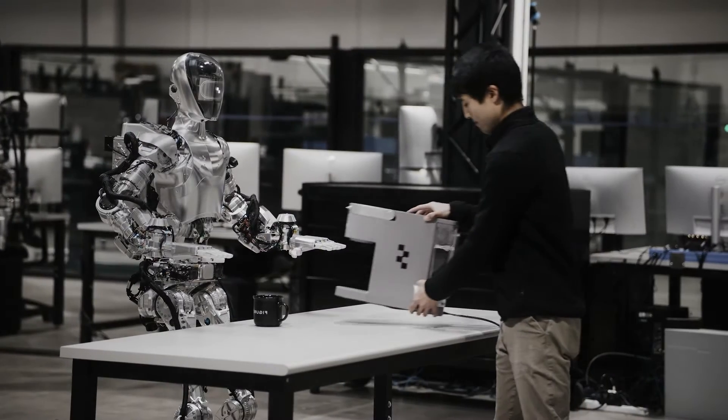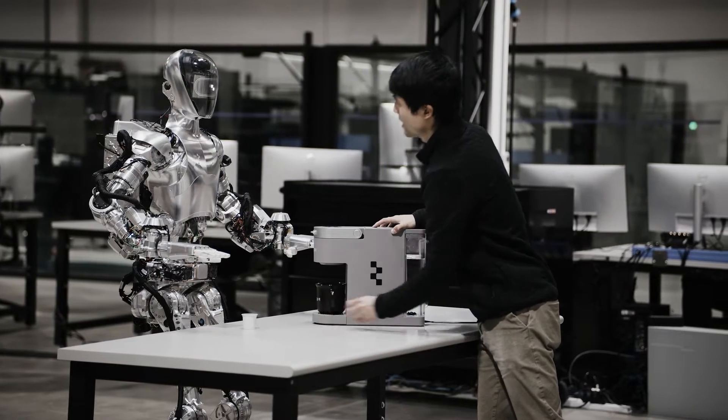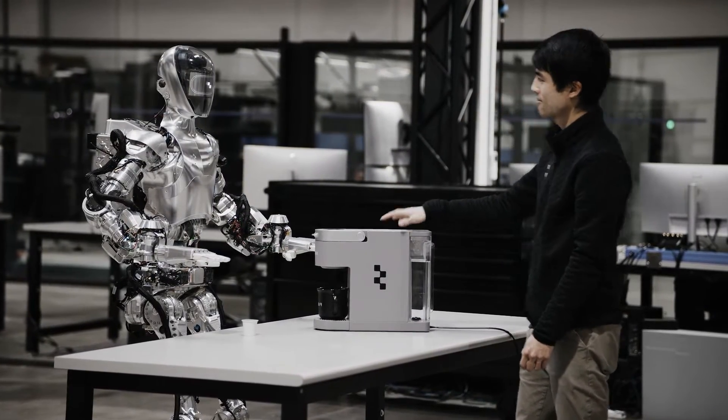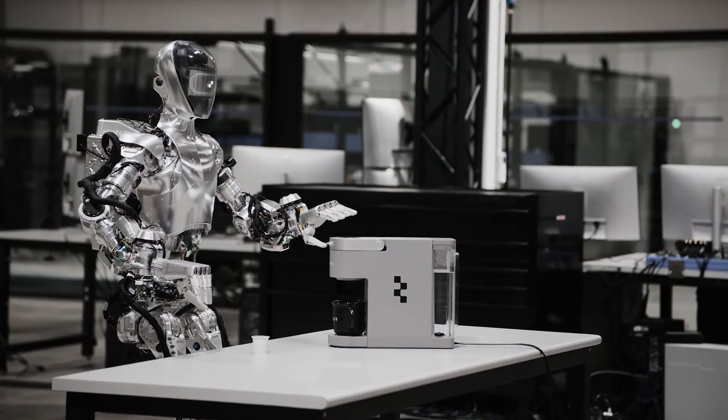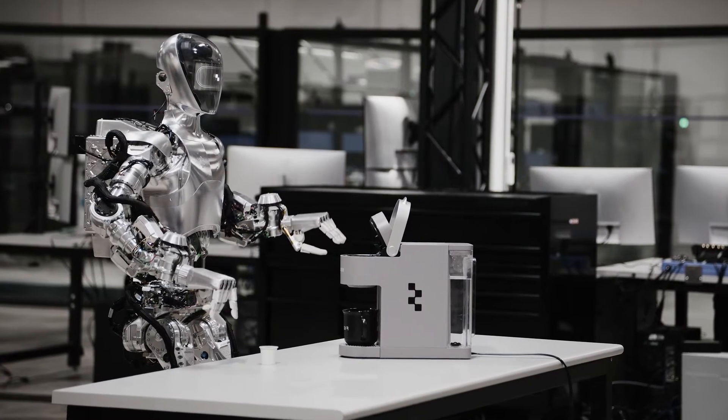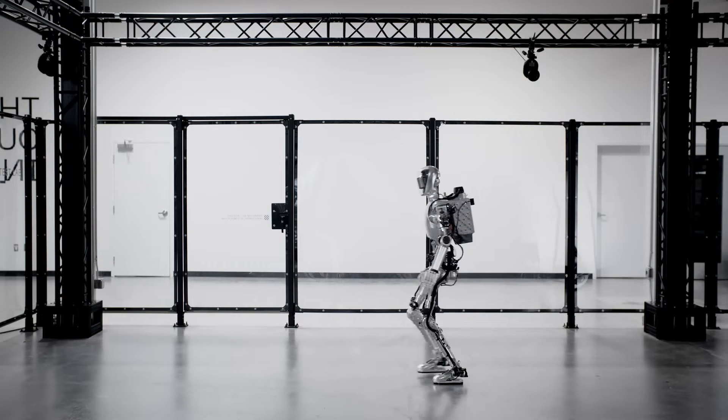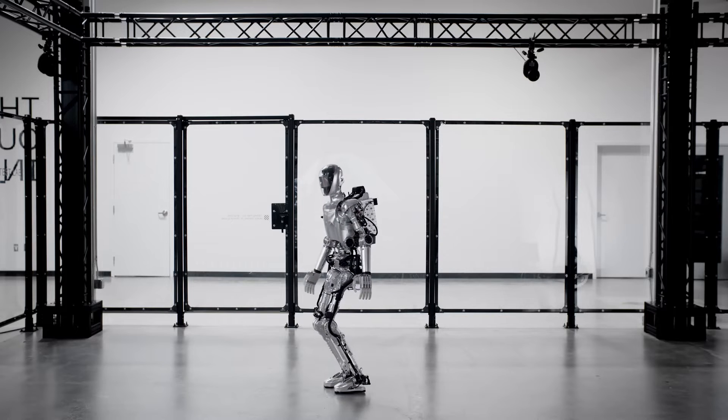Figure 0-1 can learn how to make coffee in just 10 hours, which is one of the quickest turnarounds in humanoid history. This is because Figure 0-1 uses a combination of supervised, unsupervised, and reinforcement learning to learn from its own experience and feedback. It can also leverage the data and knowledge from other Figure 0-1 robots through a cloud-based platform, which accelerates its learning process.